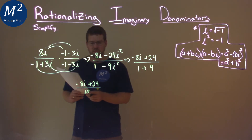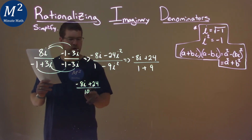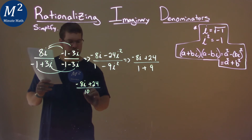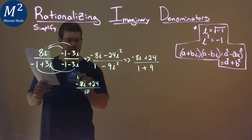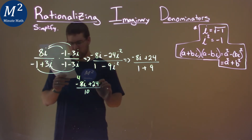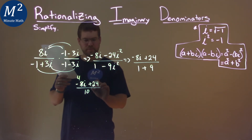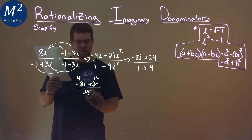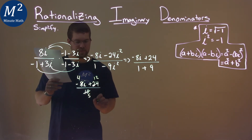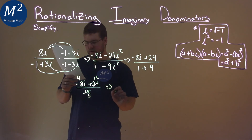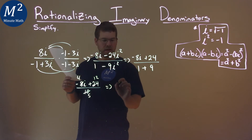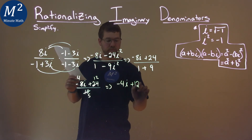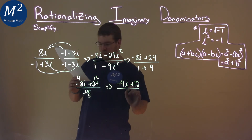2 goes into all these numbers. So 8 divided by 2 is 4, 24 divided by 2 is 12, and 10 divided by 2 is 5. So we can rewrite this as our answer: negative 4i plus 12, over 5.